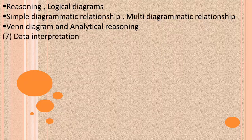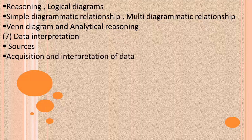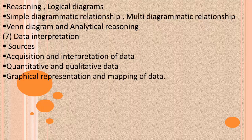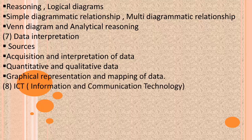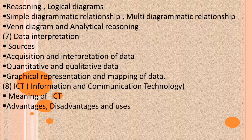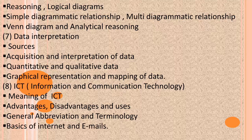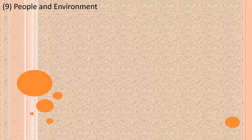Part 7 is Data Interpretation, which includes sources, acquisition and interpretation of data, quantitative and qualitative data, and graphical representation and mapping of data. Part 8 is ICT (Information and Communication Technology), covering the meaning, advantages, disadvantages and uses of ICT, general abbreviations and terminology, and basics of the internet and email.